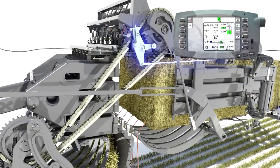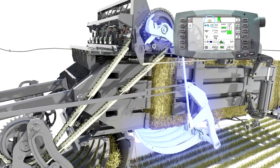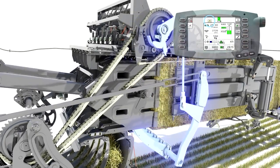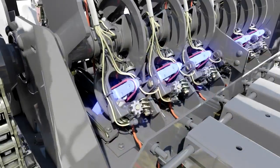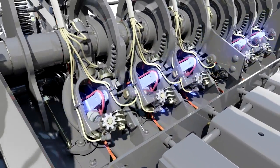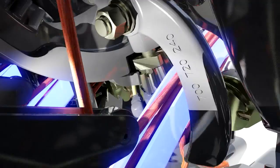The knotter symbol appears on the monitor. The first knot ties off the finished bale and the second knot starts the next bale.